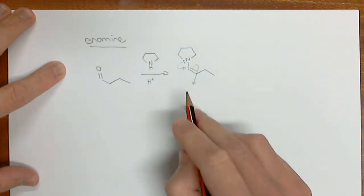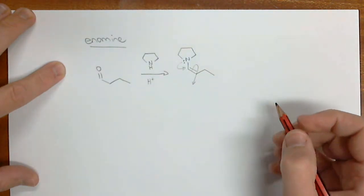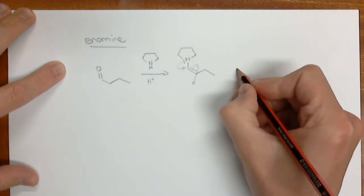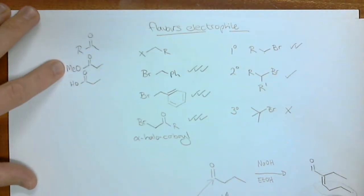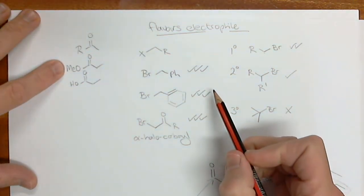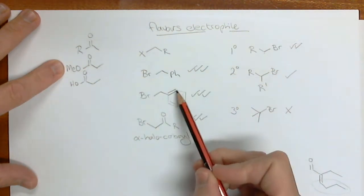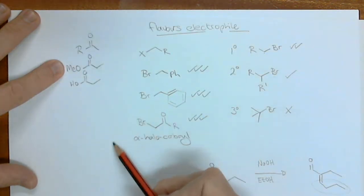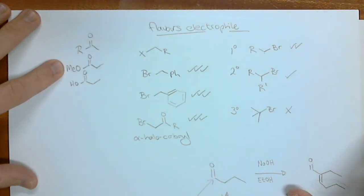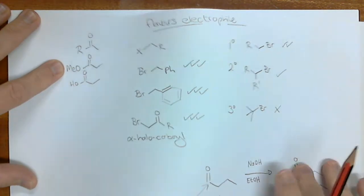That's why we don't use them that often. They are unreactive, but the only things they're going to react with are the very reactive electrophiles you've already seen. Benzyl bromide, allyl bromide, and the alpha-halo carbonyl compounds are pretty much all that the enamines are going to react with.